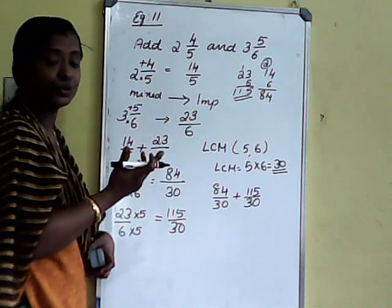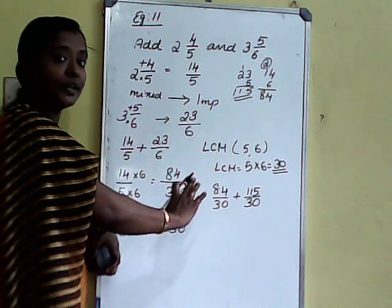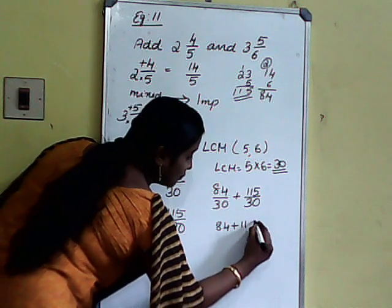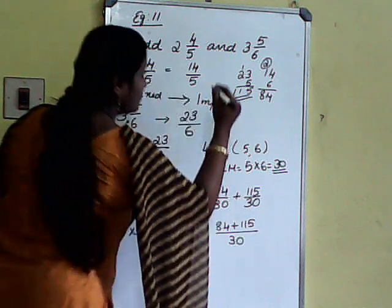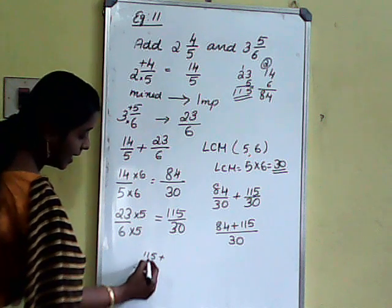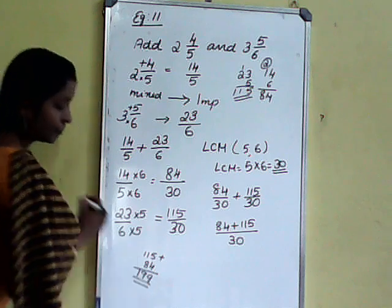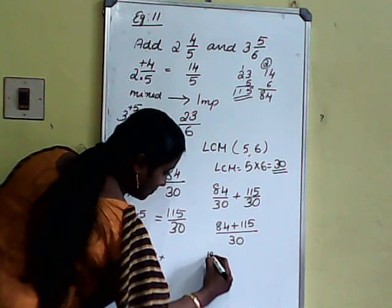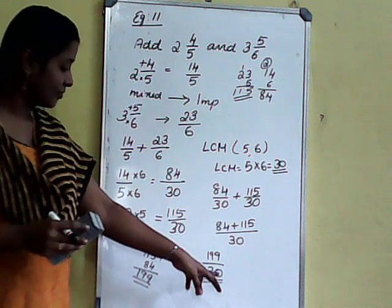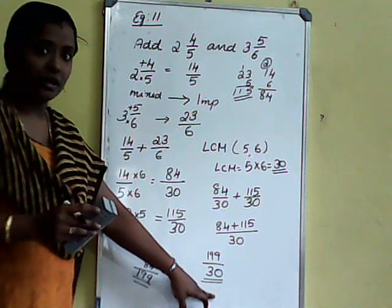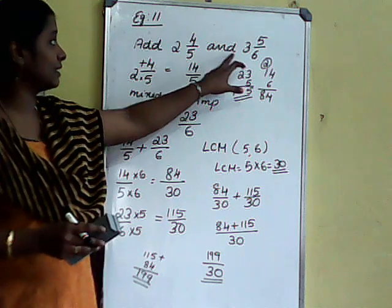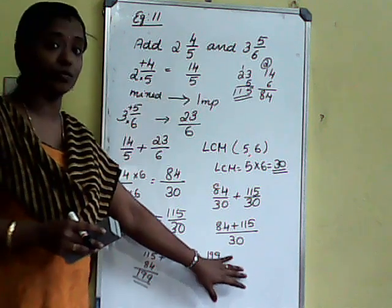Then like fractions — how to add like fractions? We keep the denominator the same and do only the operations on the numerators. So 84 plus 115 whole divided by 30. 5 plus 4 is 9, 8 plus 1 is 9 — that is 199 by 30. You can stop here, or otherwise you can convert to a mixed fraction, because our question is in mixed fraction form, so our final answer should be in mixed fraction form.